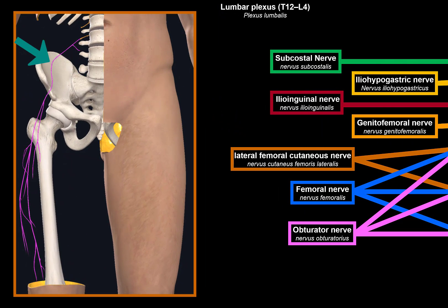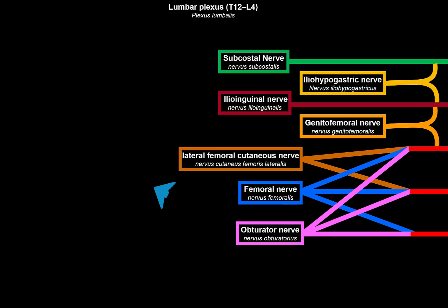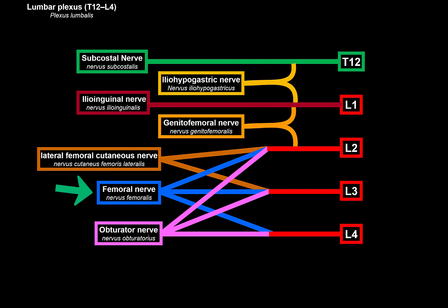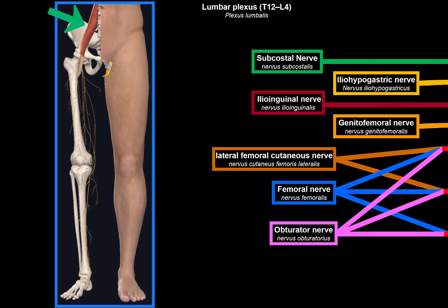The lateral cutaneous nerve of the thigh travels laterally from the psoas major, runs toward the anterior superior iliac spine, and travels through the muscular space to reach the lateral thigh, providing somatosensory innervation for the lateral thigh.